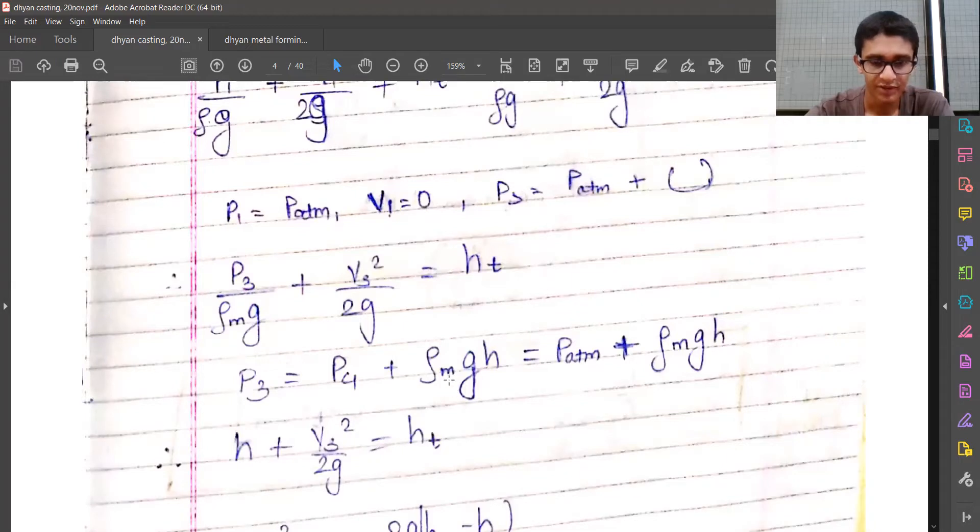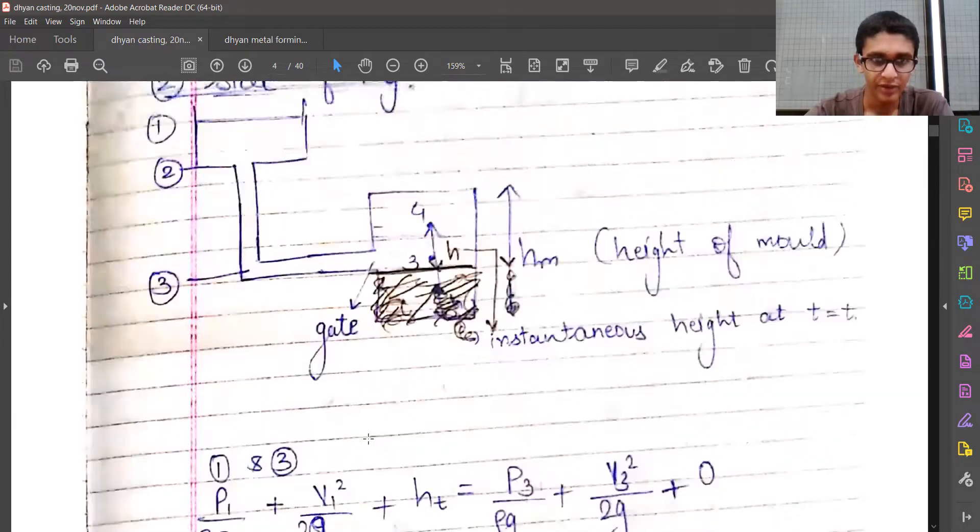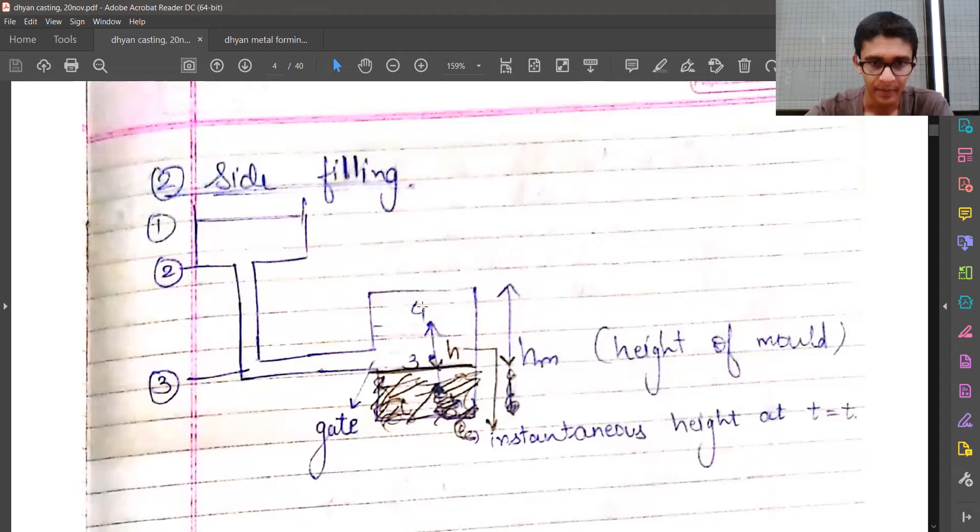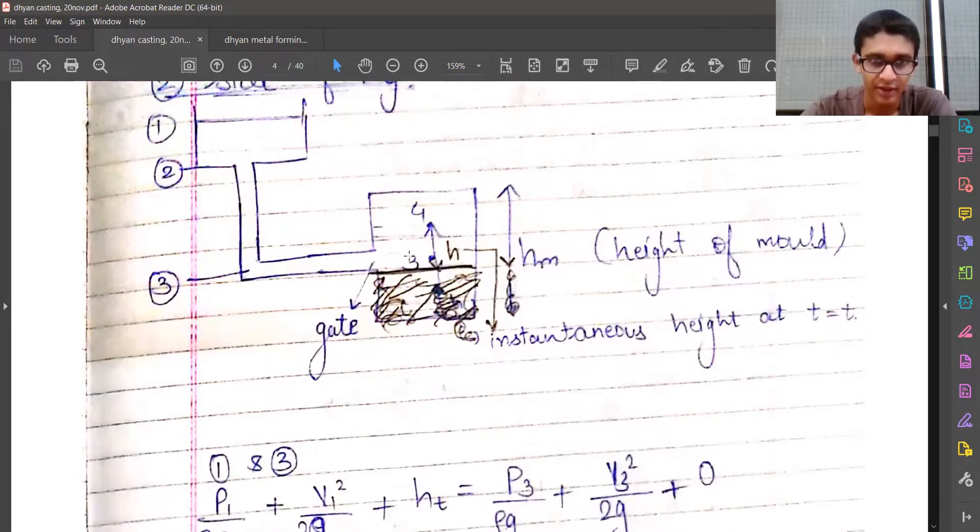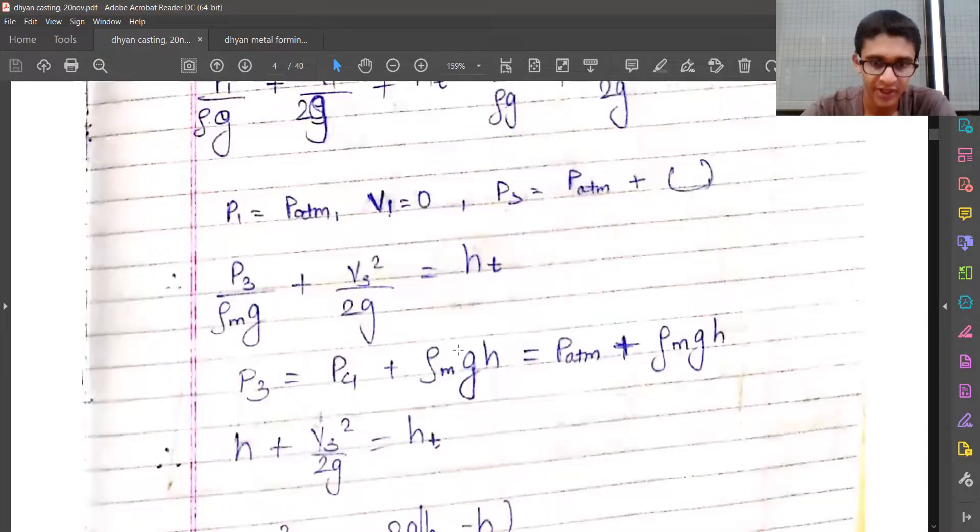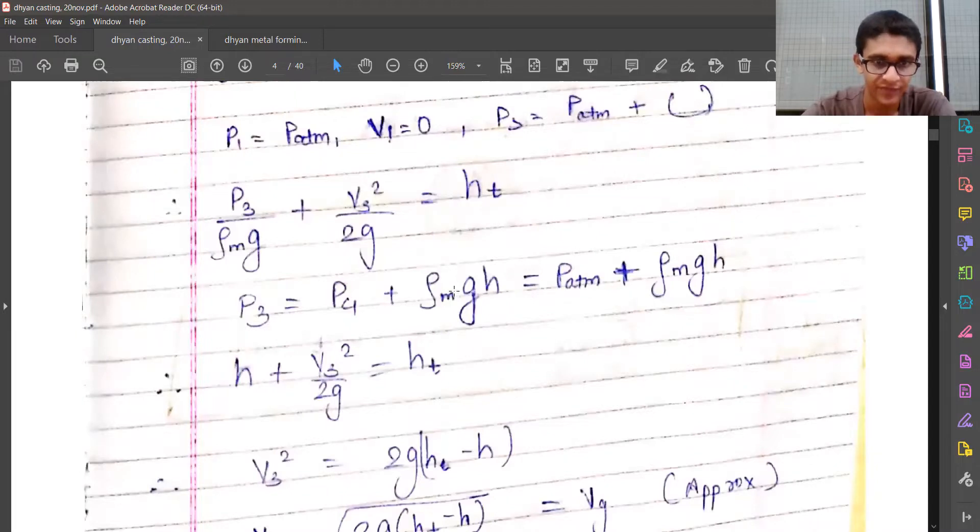Now let's write another equation: p3 equals p4 plus ρm times g times h. Location 4 is inside the mold, and before pouring, the inside was at atmospheric pressure, so p4 equals patm. Now we have a relation between p3 and h.